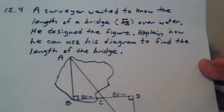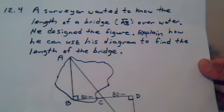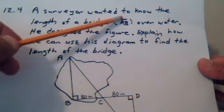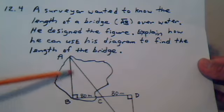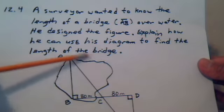A surveyor wanted to know the length of a bridge over water and line segment AB is going to represent the bridge. So here's the bridge, here's the water.